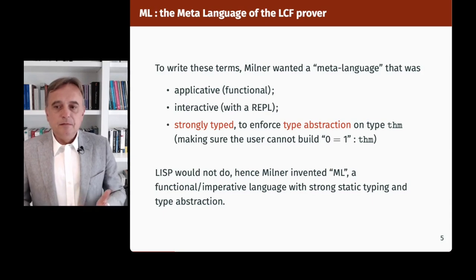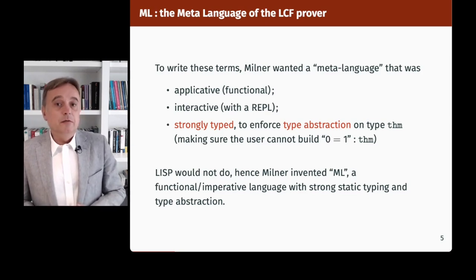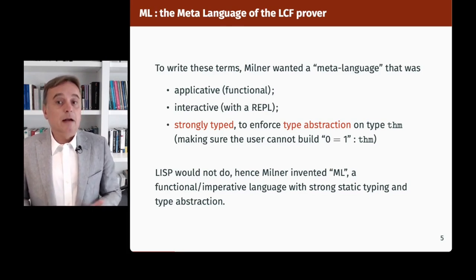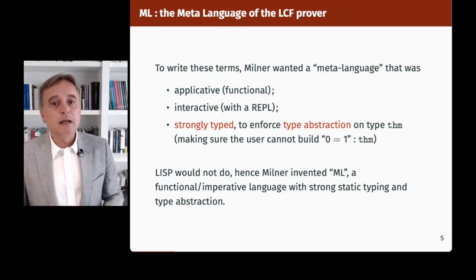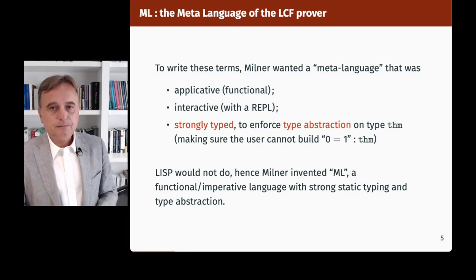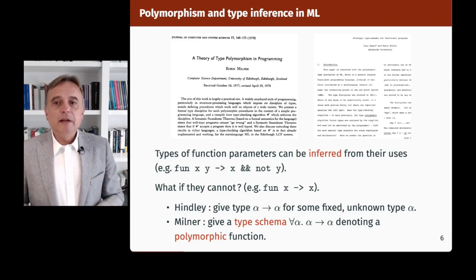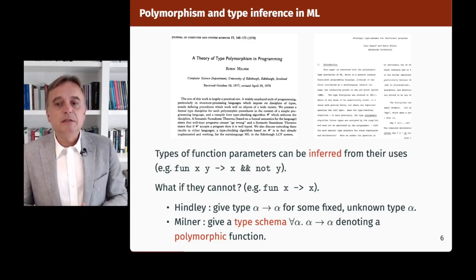It is crucial that the only THMs that can be manipulated are those built from the axioms and the inference rules of the logic. The user must not be able to claim 0 equals 1 is a theorem, for instance. So of course Milner was using Lisp, like everyone in artificial intelligence and theorem proving at that time. But Lisp would not do, because it doesn't let you define abstract types. Hence Milner invented ML, a functional and imperative language with strong static typing and type abstraction.